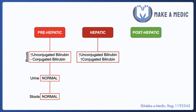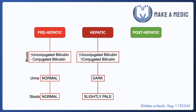With hepatic jaundice, you can get an increase in both unconjugated and conjugated bilirubin. The urine is likely to be dark because conjugated bilirubin that leaks back into the circulation from the liver is water soluble and can be excreted in the urine, giving it a dark color. The stools may be slightly pale, depending on the output of conjugated bilirubin by the liver.